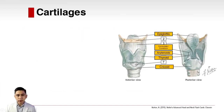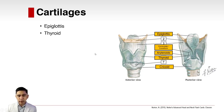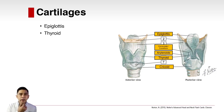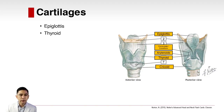This is the laryngeal complex. First we have the epiglottis, and the thyroid cartilage. Take note that the thyroid cartilage is different from the thyroid gland. The thyroid cartilage is superior, while the thyroid gland is inferior, found near the trachea. So the thyroid cartilage and the thyroid gland are different.